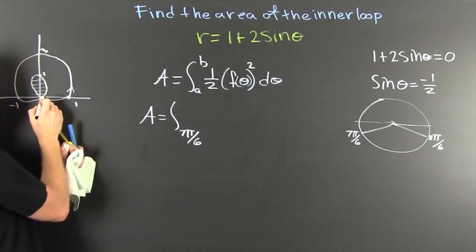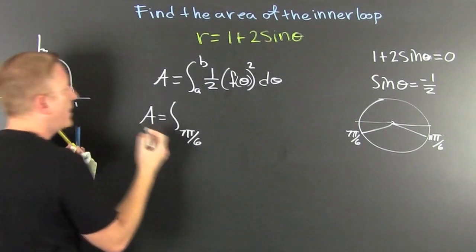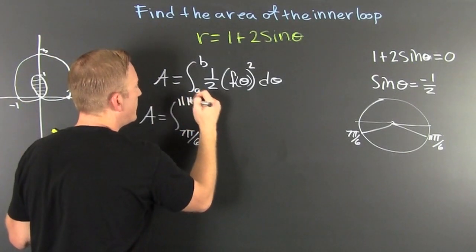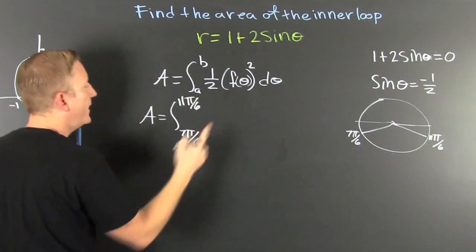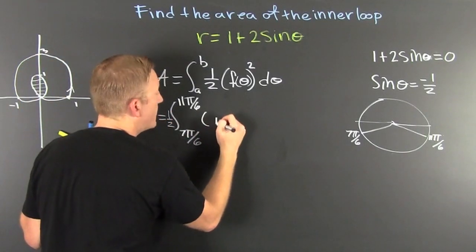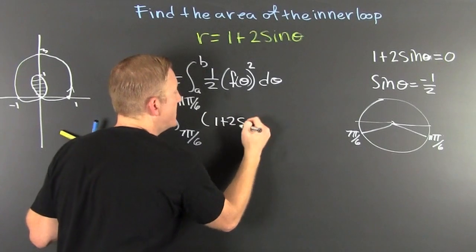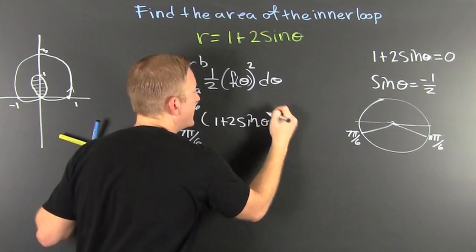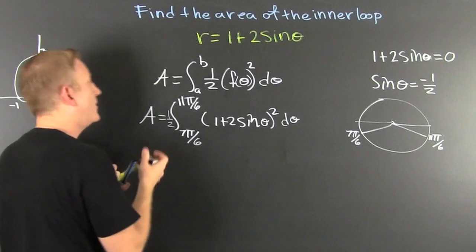That's when it approaches here. And then whoop-de-woop, 11 pi over 6. Okay, I'm going to go ahead and squeeze that half out front. And then I'm going to put 1 plus 2 times the sine of theta squared d theta in there.